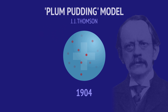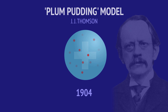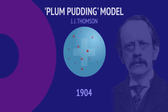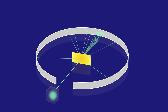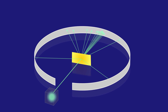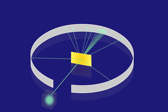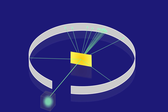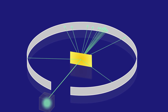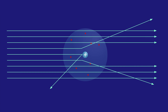This became the new accepted model of the atom, but not for long, because in 1911, a New Zealand physicist, Ernest Rutherford, would conduct the gold foil experiment, which forever changed how we view the atom.